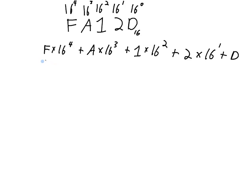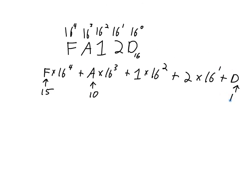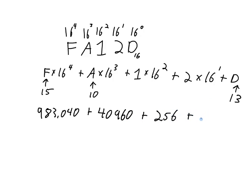To calculate this in decimal, we recognize that F equals 15, A equals 10, and D equals 13. So: 15 times 16 to the fourth is 983,040; plus 10 times 16 cubed is 40,960; plus 1 times 16 squared is 256; plus 2 times 16 to the first is 32; plus 13 equals 1,024,301 in base 10. So FA12D in base 16 equals 1,024,301 in base 10. I hope you learned something in this video, and I'll see you in the next one.